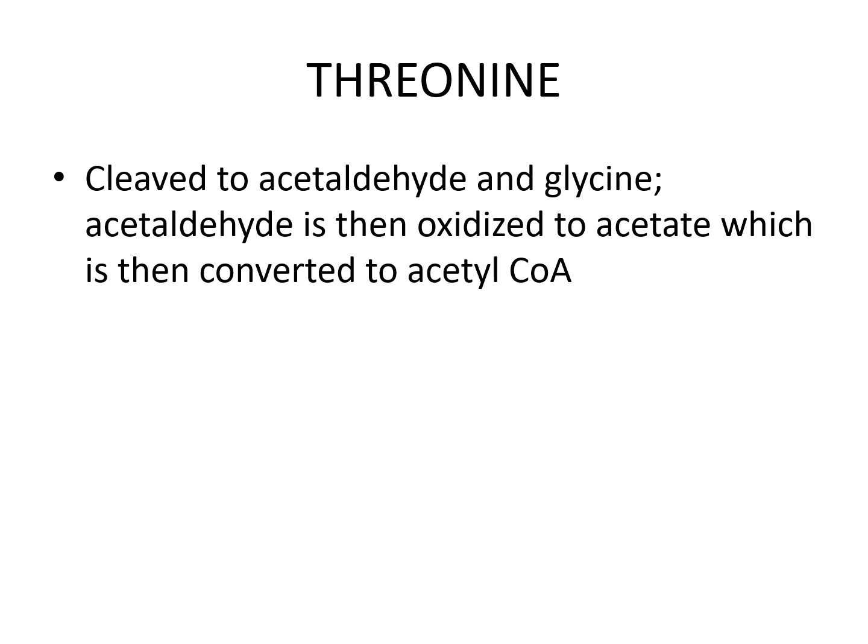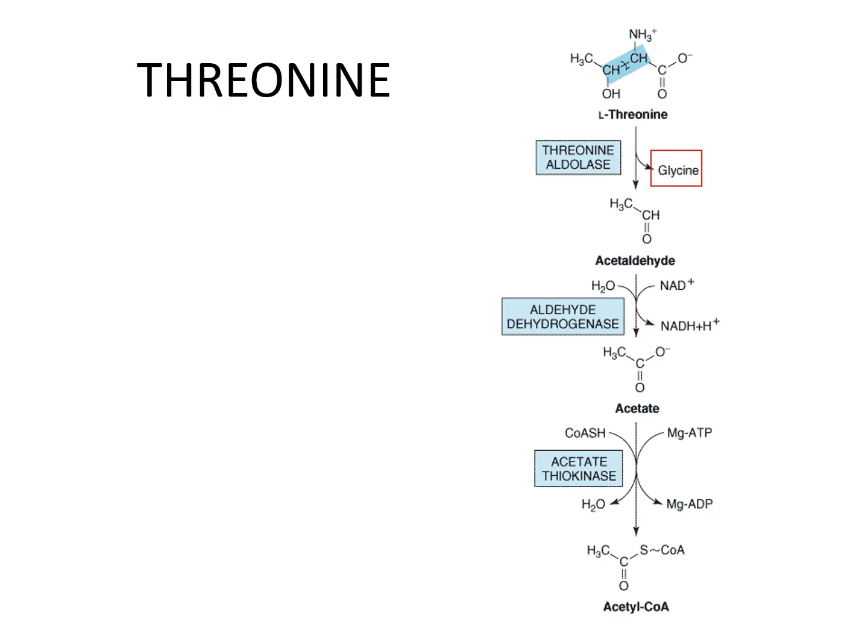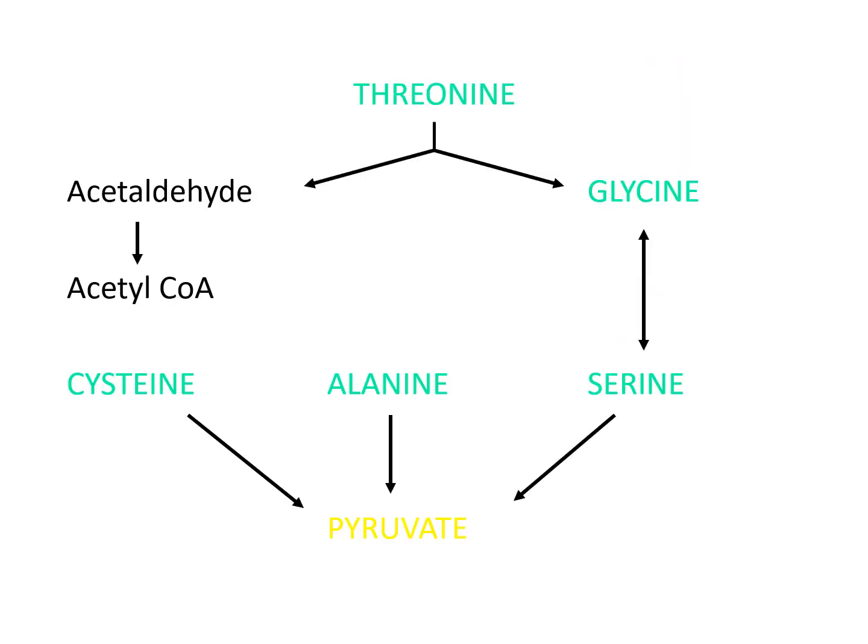Threonine is metabolized by cleavage to acetaldehyde and glycine, which is then oxidized to acetate and converted to acetyl-CoA. Threonine can also be converted to acetyl-CoA through reactions involving glycine, serine, cysteine, and alanine — with serine and alanine eventually metabolized as pyruvate.